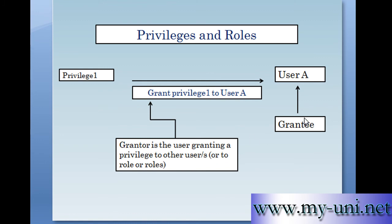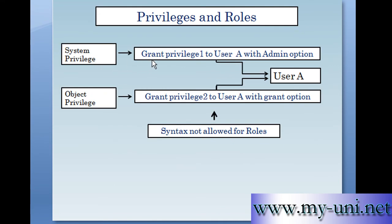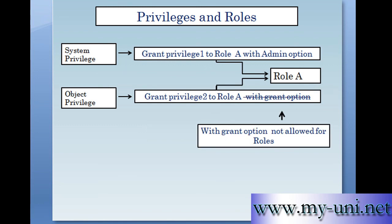The user granting a privilege is known as the grantor, and the user who receives the privilege is known as the grantee. System privileges can be granted to a user with the admin option, meaning that user can then grant this privilege to other users as well. Object privileges are granted with the grant option — similarly, the user receiving it can grant those object privileges to other users. This syntax is not allowed for roles.